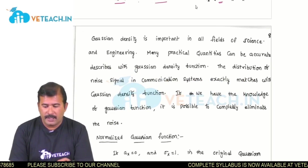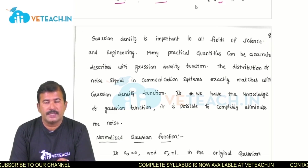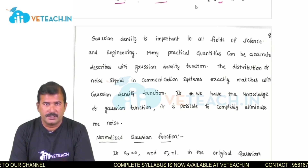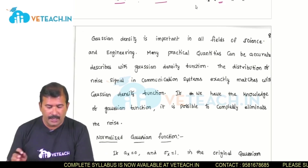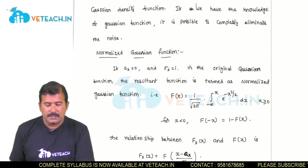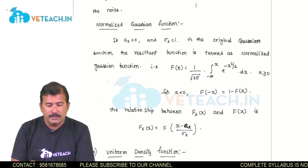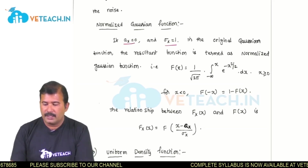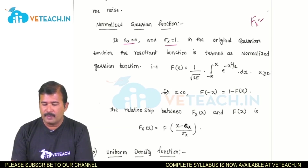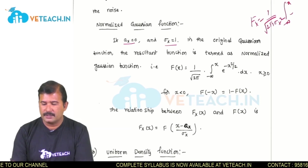Many practical quantities can be accurately described with the Gaussian density function. If we have the knowledge of Gaussian density function, we can accurately eliminate the noise from communication systems, because in communication systems the noise exactly matches with the Gaussian density function. The normalized Gaussian function is also an important quantity derived from Gaussian. If we substitute Ax equals to 0 and sigma x equals to 1 in the Gaussian distribution function — which is 1 by square root of 2 pi sigma x squared, integral from minus infinity to x, e power minus of x minus Ax squared by 2 sigma x squared.